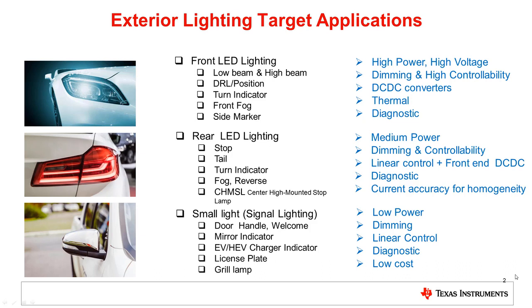Automotive exterior lighting applications can be divided into three categories: front light, rear light, and small light. Front lighting is the most power-hungry application and often has a high degree of complexity, and we have seen a high number of innovations in this field. Rear light applications have medium power requirements and increasing complexity for animations. Small light applications use small power and have basic controllability requirements.